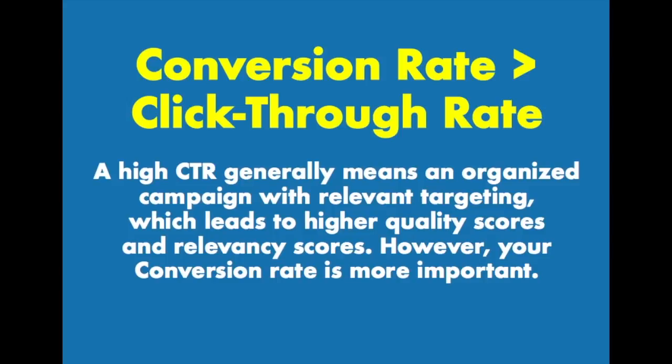Ultimately, what you want to do is make sure you have organized campaigns, relevant targeting, high quality scores, high relevancy scores, and everything else should fall into place. The main issue I see sometimes is advertisers not optimizing for conversions — you really need to optimize for conversions no matter where you're advertising; it's the most important thing. I also see advertisers optimizing so much for click-through rate that they don't realize that a simple landing page tweak, testing different landing pages, maybe testing new ad formats, is really going to help with that overall conversion rate as well.